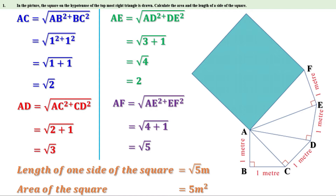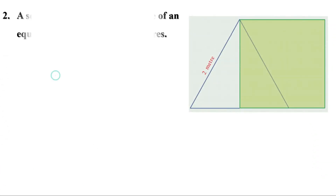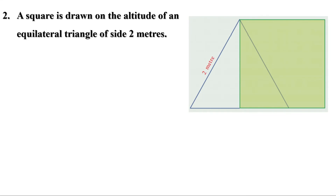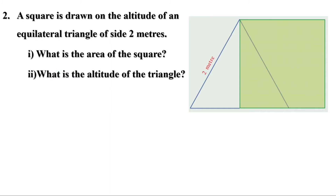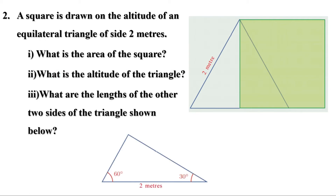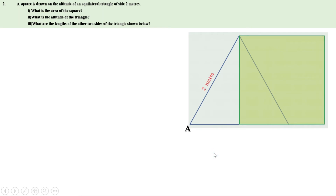Now let us do the remaining problems on page 49. A square is drawn on the altitude of an equilateral triangle of side 2 meters. What is the area of the square? What is the altitude of the triangle? Let us give a name for the triangle. Let this point be D. We have to find the area of this square. Area of a square is side squared. So to find the area, we need to find the length of one side. Here, CD is a side of the square, so it is enough to find the length of CD. Given that ABC is an equilateral triangle.